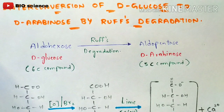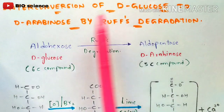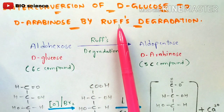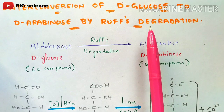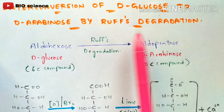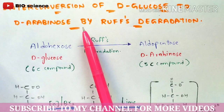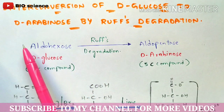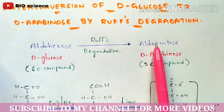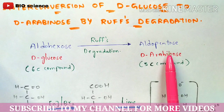In this video we are going to discuss about the interconversion of D-glucose to D-arabinose by Ruff's Degradation. The main aim of Ruff's Degradation is this interconversion of D-glucose to D-arabinose, where the aldohexose is D-glucose and the aldopentose is D-arabinose.